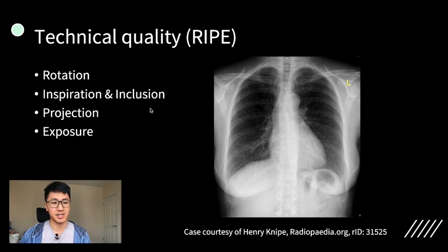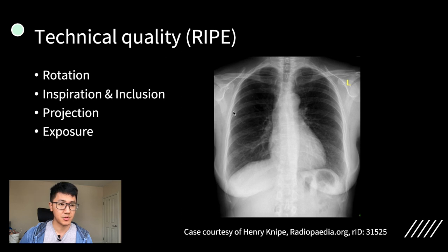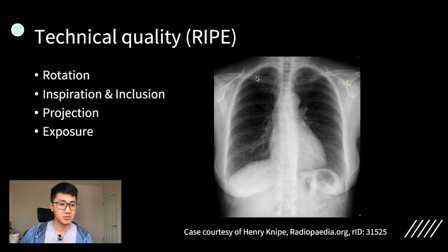Next is to look at inspiration and inclusion. For a chest x-ray, a patient has to have taken a big enough breath in, otherwise it can look like there's pathology in the lungs. To assess this, you want to count at least six anterior ribs. If you imagine the ribs attached to the vertebral column posteriorly, you can see those are the posterior ribs, and if you follow them around they become the anterior ribs. The anterior ribs seem to disappear in the middle of nowhere because they join the costal cartilages. Cartilage is less dense than bone so they don't show up as well. So you just count at least six of these anterior ribs.